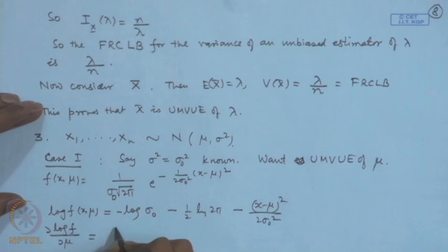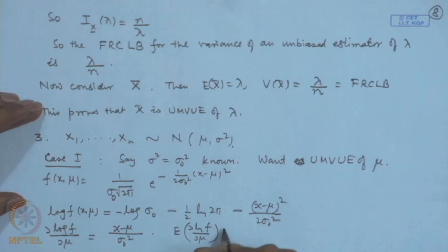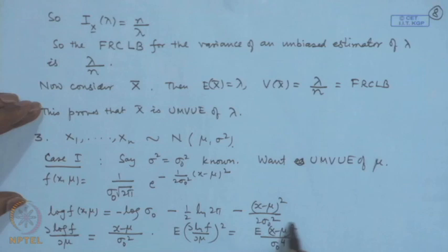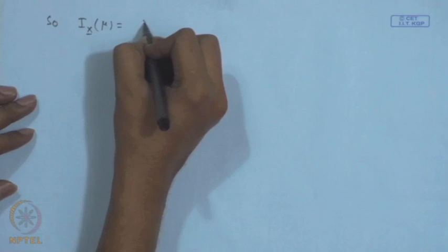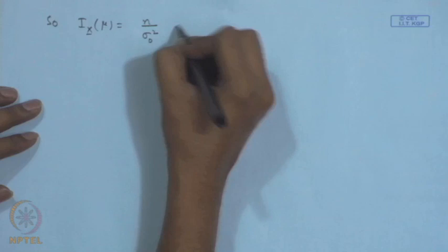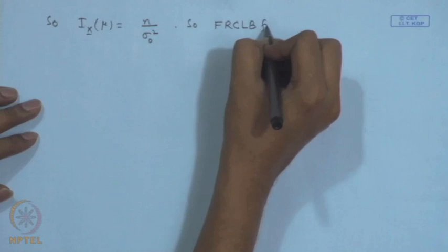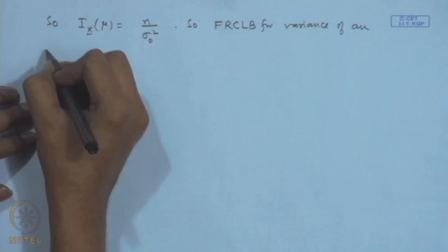The expectation of (∂ log f/∂μ)² equals E[(x−μ)²]/σ₀⁴. In the normal distribution, E[(x−μ)²] is the variance σ₀², so this reduces to 1/σ₀². Therefore, the information content in the sample is n/σ₀², and the Cramér-Rao lower bound for the variance of an unbiased estimator of μ is σ₀²/n.